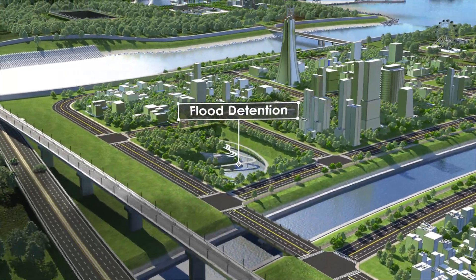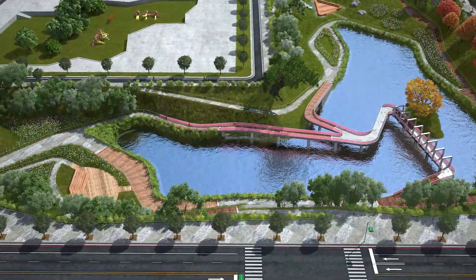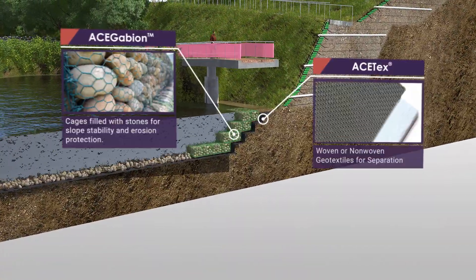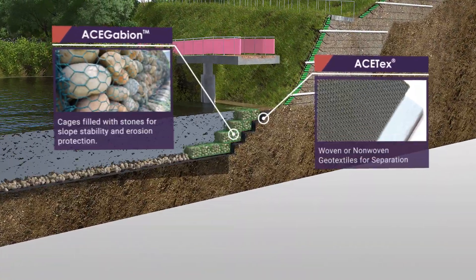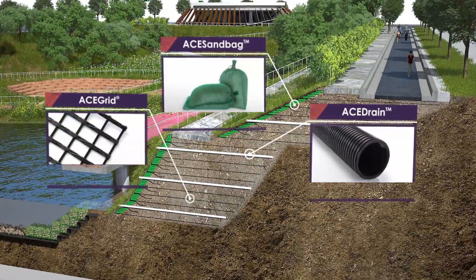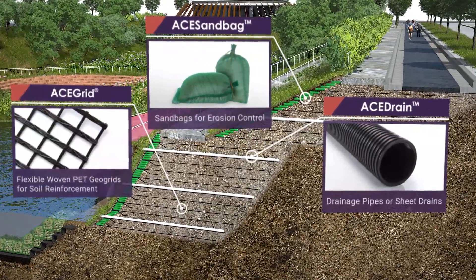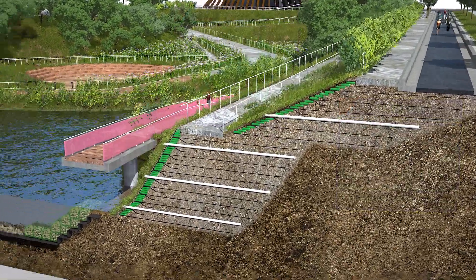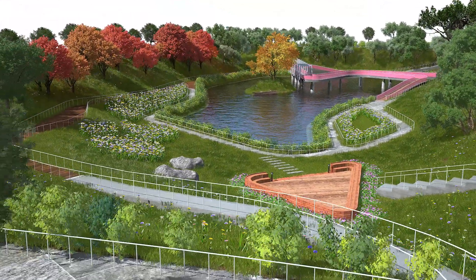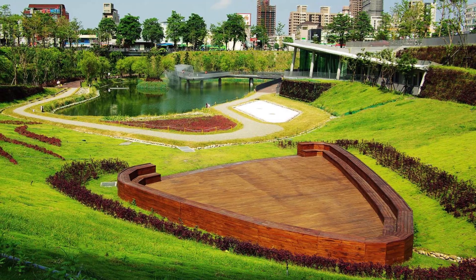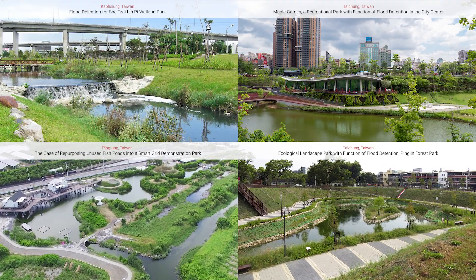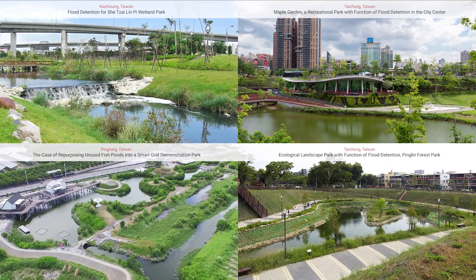Flood Detention: Building a flood detention pond combined with a wrapped-around reinforced retaining wall can achieve earthwork balance by using the excavated soil to backfill into the reinforced structure. The wall surface with green lush vegetation is an extra benefit to the recreational space. Besides, ACE Liner Geosynthetic Clay Liner is suitable to strengthen leakage resistance at the bottom of the pond.